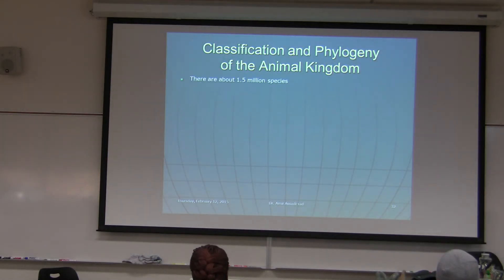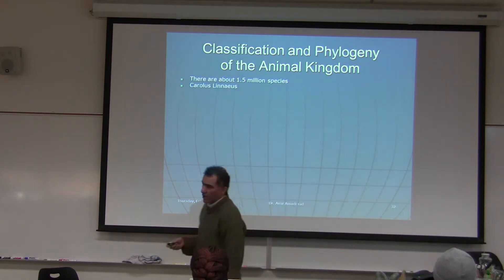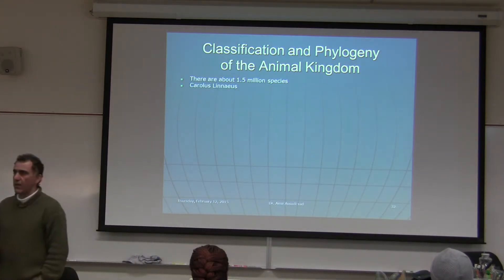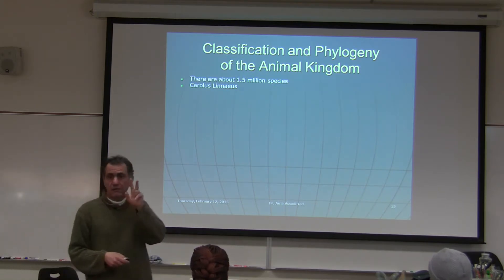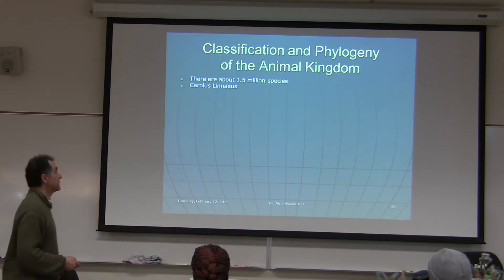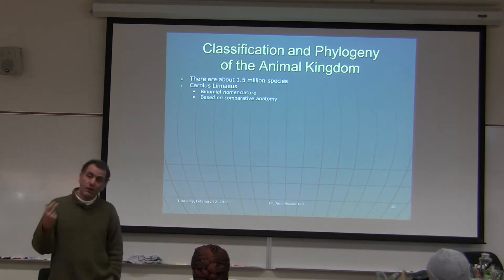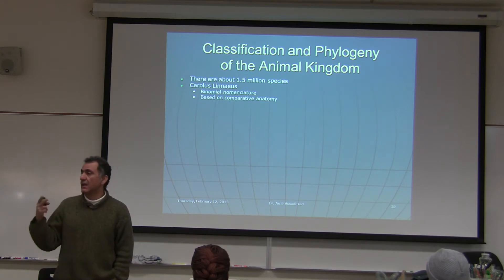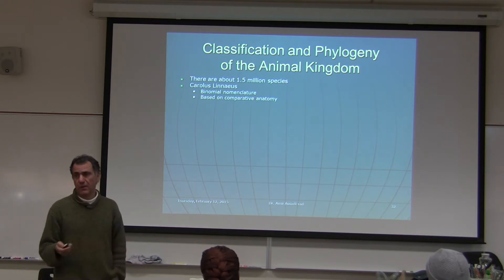Classification is something you should know for the rest of the semester. There are 1.5 million species. Carolus Linnaeus was the father of classification. He said to give each organism on Earth two names: genus and species — that's binomial nomenclature, based on comparative anatomy. Nowadays, they also use DNA and rRNA for classification.